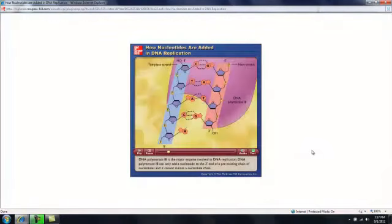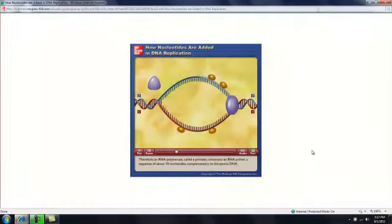DNA polymerase 3 is the major enzyme involved in DNA replication. DNA polymerase 3 can only add a nucleotide to the 3' end of a pre-existing chain of nucleotides, and it cannot initiate a nucleotide chain. Therefore, an RNA polymerase, called a primase, constructs an RNA primer, a sequence of about 10 nucleotides, complementary to the parent DNA. DNA polymerase 3 can then add deoxyribonucleotides to synthesize the new complementary strand of DNA.